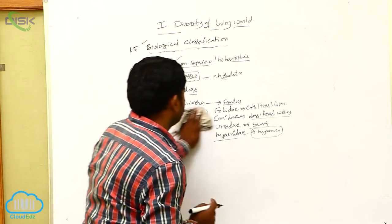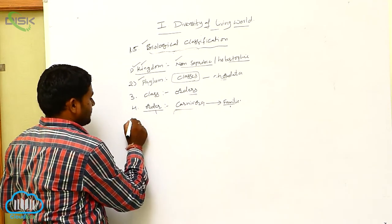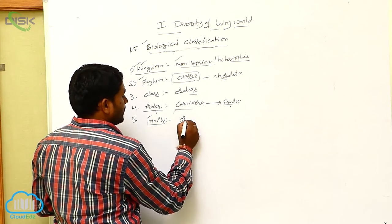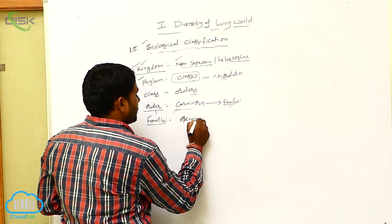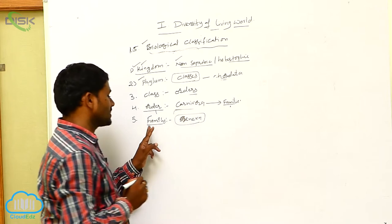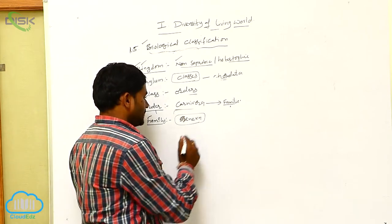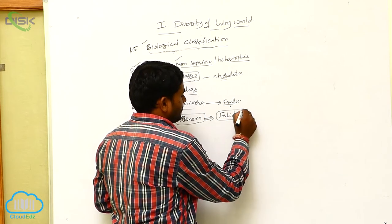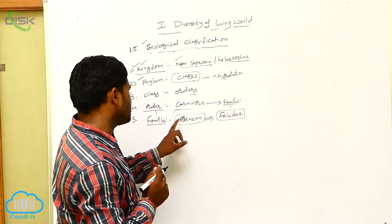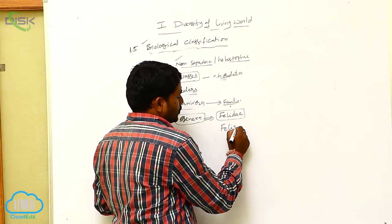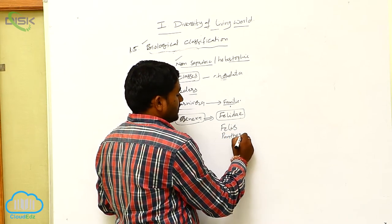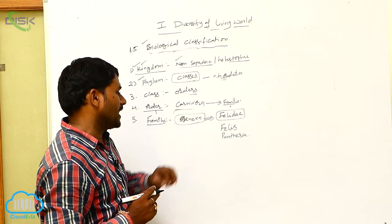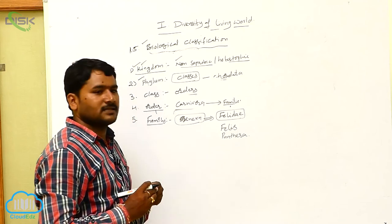Let's see family. Family is a group of one or more closely related genera. For example, if you take the family Felidae — Felidae is a family, and the Felidae family is made up of different genera. There are two different types of genera we can identify: Felis and Panthera. So Felis is one genus and Panthera is another genus.